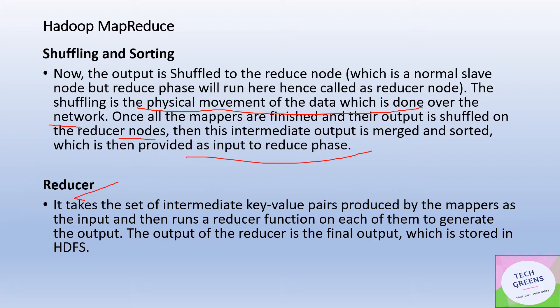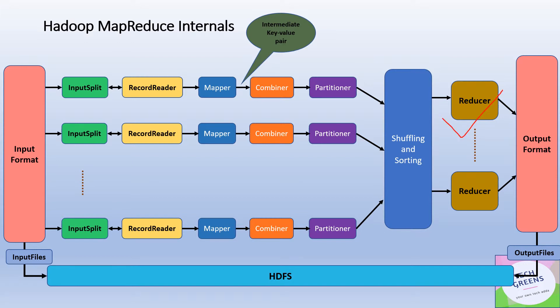The Reducer takes the intermediate key-value pairs produced by the Mappers or Combiner and runs a reducer function on each of these key-value pairs to generate the output. The Reducer performs aggregation or summation based on the keys as written in the program. The output of the Reducer is produced in the form of supported output formats and is eventually stored on HDFS or the local system.